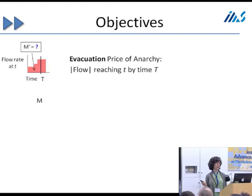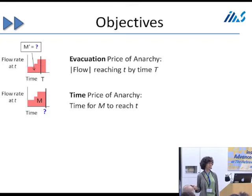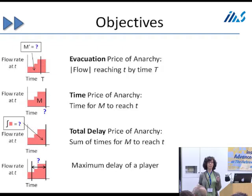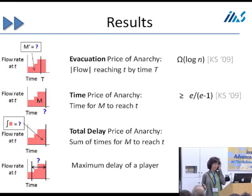There are several different measures we could use. One is the evacuation price of anarchy: fix a time-bound t and ask how much flow can get to the destination by time t. A second is the time price of anarchy: fix the amount of flow and ask how long it takes for all the flow to reach the destination. A third is the total delay price of anarchy: fix flow amount m and look at the average or total time over all units of flow to reach the destination. Finally, the maximum delay of a player: the time from when a player leaves the source to when they reach the destination.